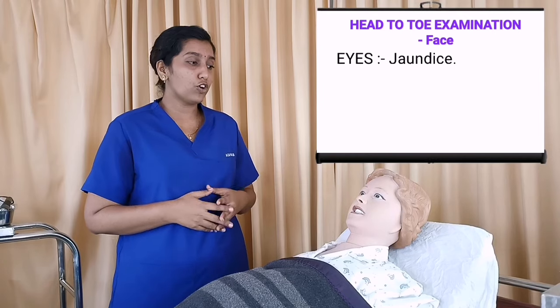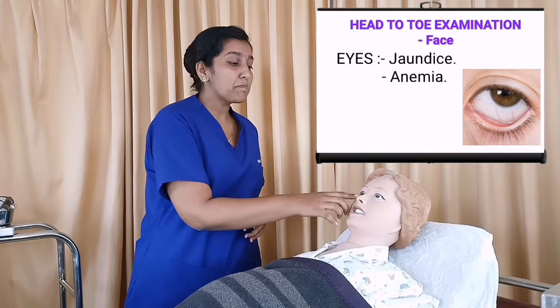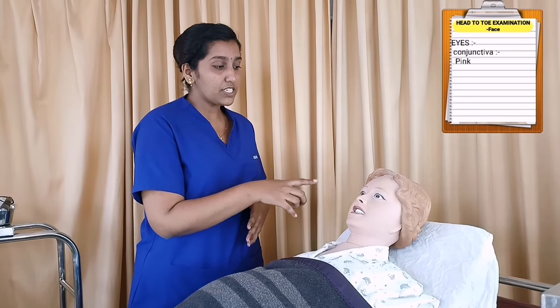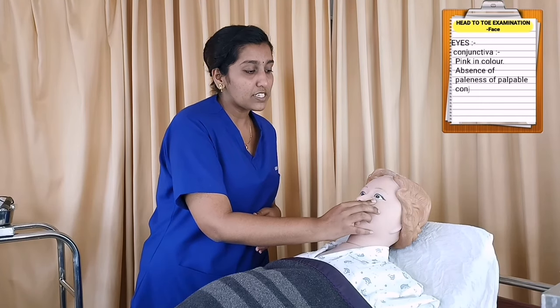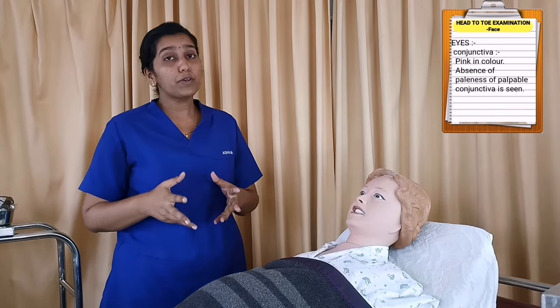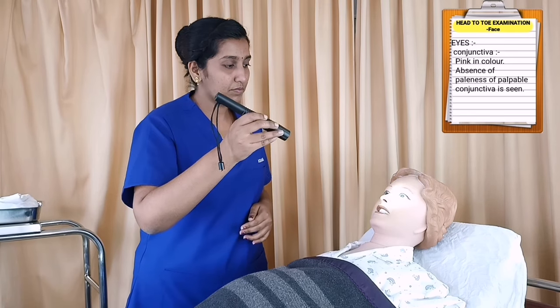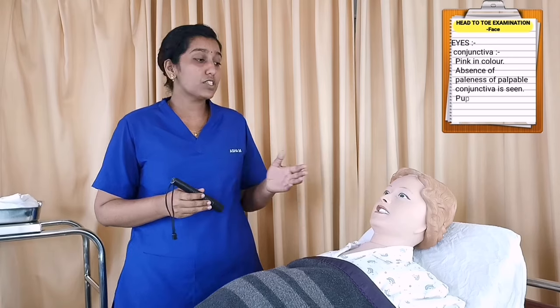Moving down to eyes, we check for jaundice, anemia, and periorbital puffiness. Mrs. Priyanka doesn't have yellowish discoloration of sclera; absence of paleness of palpebral conjunctiva is seen. Pupillary reaction is checked using a torch — move from outer canthus to inner canthus. Mrs. Priyanka has normal pupillary reaction.